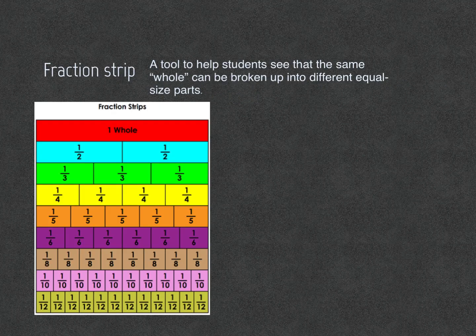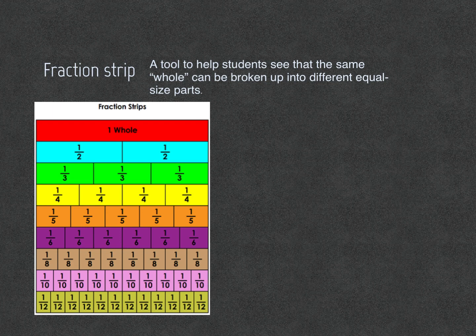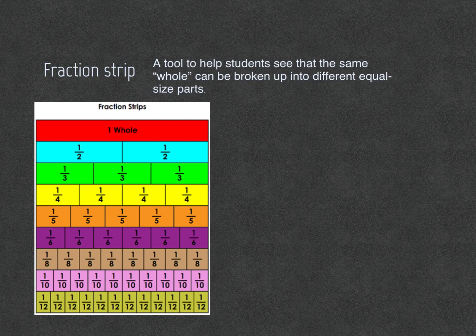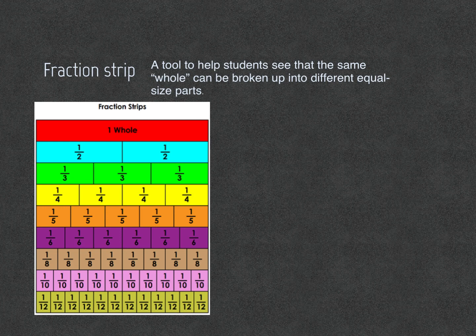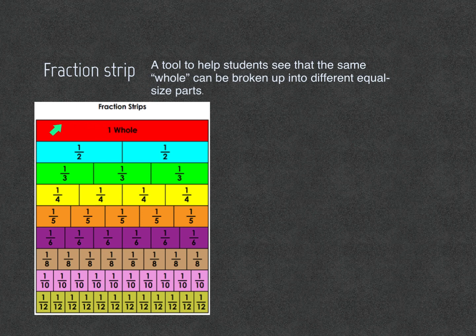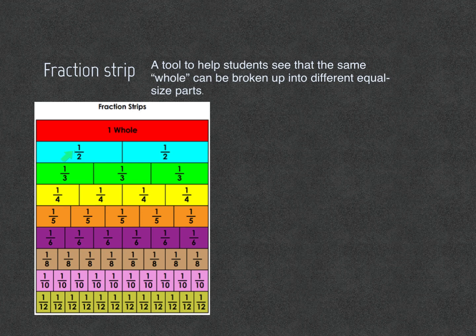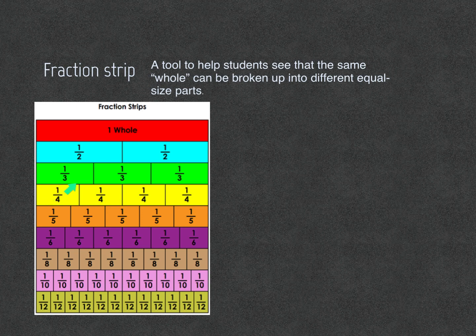Fraction strip. A fraction strip is a tool to help students see that the same whole can be broken up into different equal size parts. For example, one whole is equivalent or the same as one half and one half and as one third and one third and one third and so on with all of these numbers.